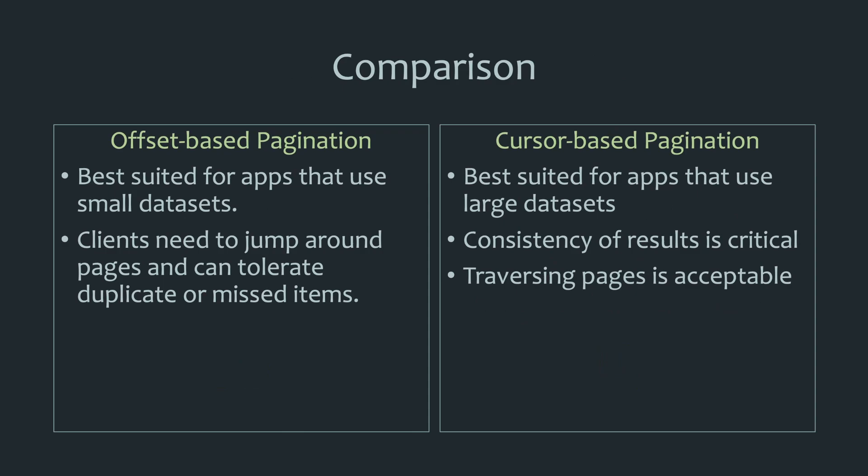Let's wrap up with a quick comparison of when to use each. Offset-based pagination is best for applications that don't deal with large datasets, or where the depth of the offset is controlled, and where clients can tolerate duplicates or missed items. Cursor-based pagination is ideal for high-traffic applications where clients need to traverse large datasets and the consistency of results is critical. If that's your use case, you should definitely go for cursor-based pagination.